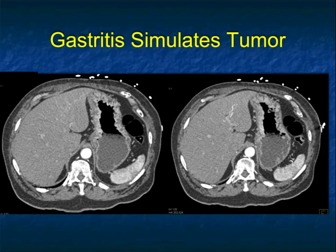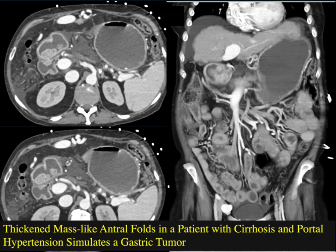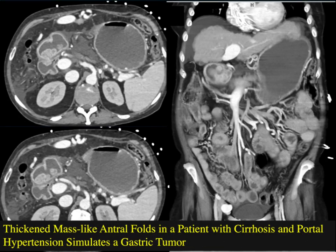Another example — look at the thickening in the body of the stomach. Could this be an infiltrating process? It surely simulates a tumor, but this was simply gastritis. Another example: more commonly, patients with gastritis often have other issues. One common finding is cirrhosis. Look at these polypoid lesions in the antrum — thickened mass-like antral folds in a patient with cirrhosis and portal hypertension. These simulated a gastric cancer. Gastric and esophageal cancer are not uncommon in patients with cirrhosis, particularly alcohol-induced. Just a very impressive fold pattern.